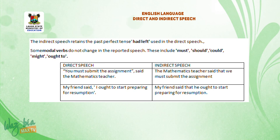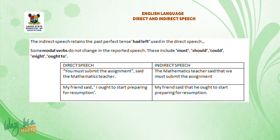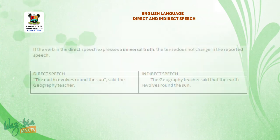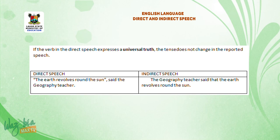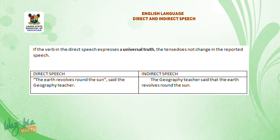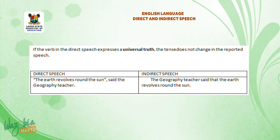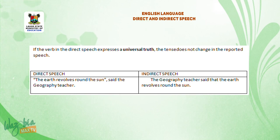My friend said, 'I ought to start preparing for resumption.' If the verb in the direct speech expresses a universal truth, the tense does not change in the reported speech. 'The earth revolves round the sun,' said the geography teacher. — The geography teacher said that the earth revolves round the sun.